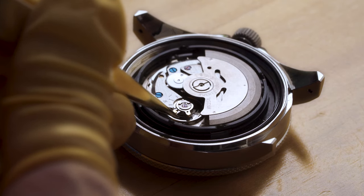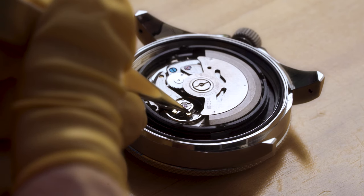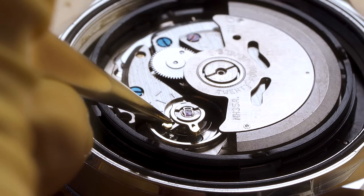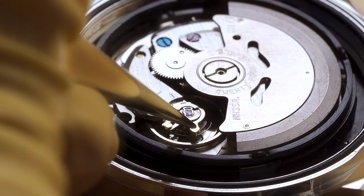This is the balance wheel and notice the two levers here. This one at the very end of a hairspring is called a stud and this one next to it is called a regulator.